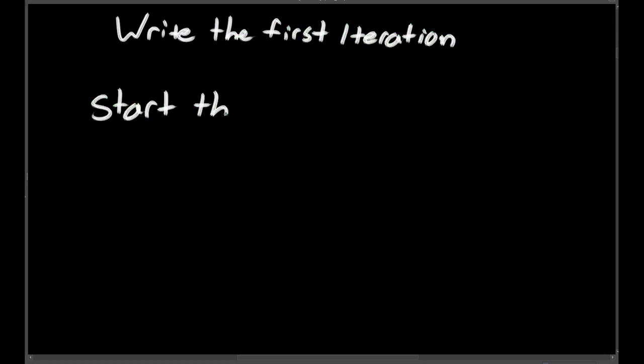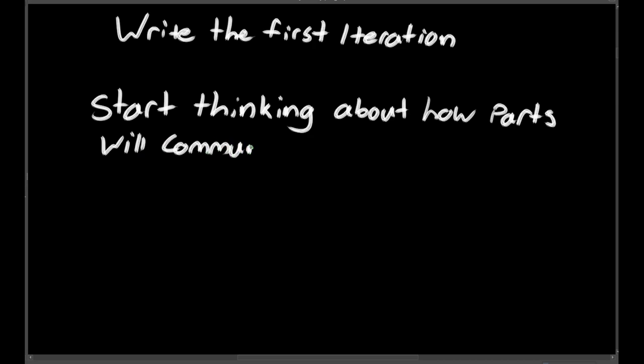Now you can finally start writing some code. This is where you'll want to turn your pseudocode into the first iteration of code. You may want to think a bit about how this part's going to interact with all of the other parts, but don't worry too much about it yet, just write the code in a way that you can test it independently from the rest of the problem.